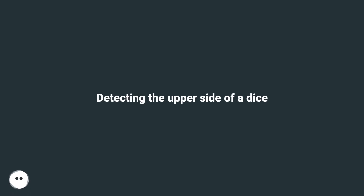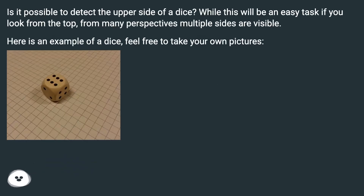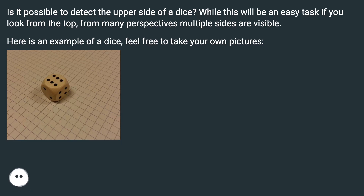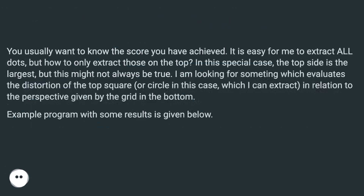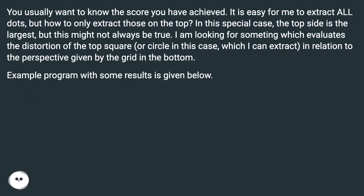Detecting the upper side of a dice — is it possible? While this will be an easy task if you look from the top, from many perspectives multiple sides are visible. Here is an example of a dice; feel free to take your own pictures. You usually want to know the score you have achieved. It is easy to extract all dots, but how to only extract those on the top?